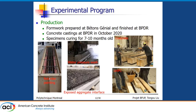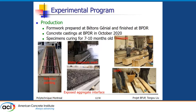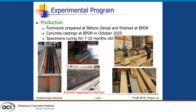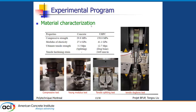We first built the formwork and used retarded painting to obtain the exposed aggregate interface on the concrete surface. We first cast the concrete, then used water pressure washing to create the exposed aggregate interface. Then we cast the UHPC using an inclined bucket. You can see the UHPC, although self-compacting, flows slowly compared with normal concrete. After that, we performed material characterization. The concrete is normal strength concrete with less than 30 MPa, while the UHPC with three percent fibers has over 150 MPa, along with high tensile strength obtained by the dog bone test.